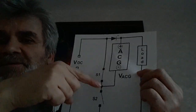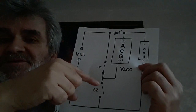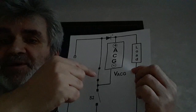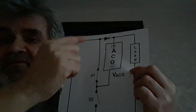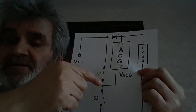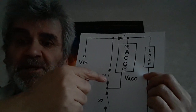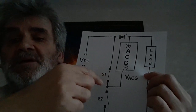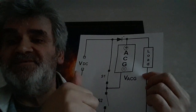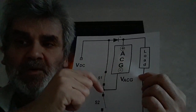When this switch is on and that one is off, it charges in series. This ACG — Asymmetric Current Generator — when it reverses, then it goes in series with the source and sends to the load.